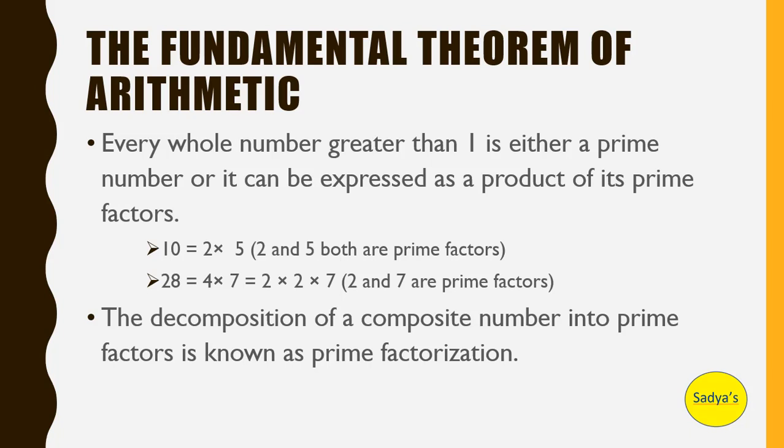Similarly, 28 can be written as 4 into 7. Now 7 is a prime number but 4 isn't. But 4 can be broken down into 2 into 2. So it means that 28 can be written as 2 multiplied by 2 multiplied by 7. That is 28, a composite number, can be written as a product of its prime factors. Now this process of writing composite numbers into product of prime factors is known as prime factorization. So the decomposition or the breakdown of a composite number into prime factors is known as prime factorization.